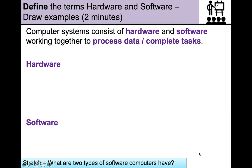So we need to be able to define the terms hardware and software and we could draw some examples as well if you like. So feel free to pause this video. Computer systems consist of hardware and software and they need to work together to process that data and complete a task. So what is hardware? What is software? And as a stretch, what are two types of software computers have?